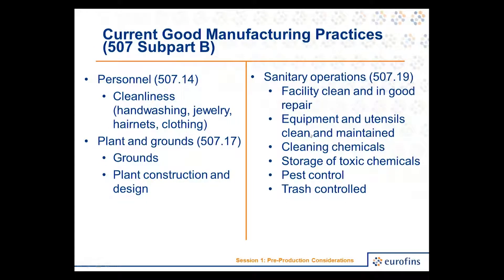In looking at the current good manufacturing practices, we've got eight subsections of Subpart B. These are very similar to the human food GMPs. There's one piece that is not included, which is allergen management. We start with personnel — dealing with cleanliness of employees, requirements on hand-washing, use of jewelry, hairnets, clothing. The GMPs use a lot of language like 'employees shall have satisfactorily clean hands' and 'the cleanliness of the facility shall be satisfactory' — which gives a lot of flexibility but also a lot of room for interpretation.